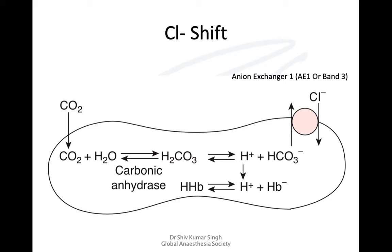The chloride shift requires energy and uses an ion exchanger, also known as AE1 or Band 3, at the surface of the RBCs. This helps in accepting chloride and giving out bicarbonate. Along with that, there is an increase in water, so at the tissue level the red cells are actually larger in size than when they are present in the alveoli.